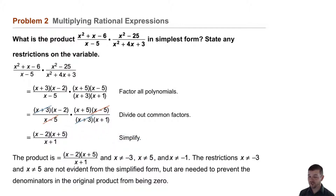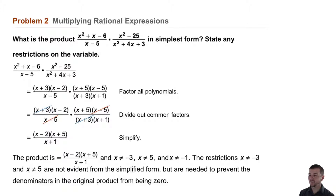Note that the restrictions x does not equal negative 3 and x does not equal 5 are not evident from the simplified form. We have to refer back to the original factored form of the expression, but these are needed to prevent the denominators in the original product from being zero.